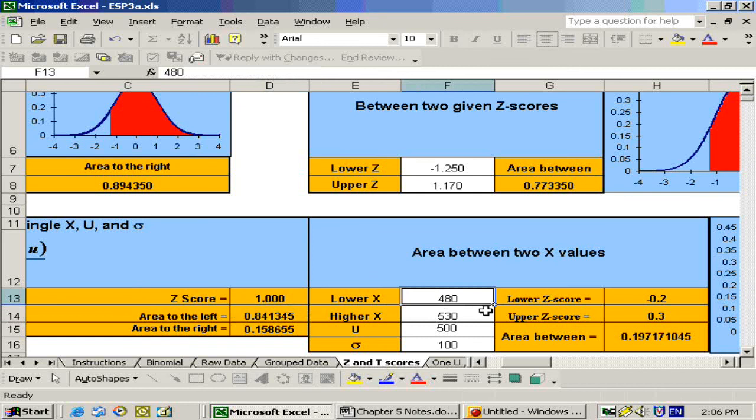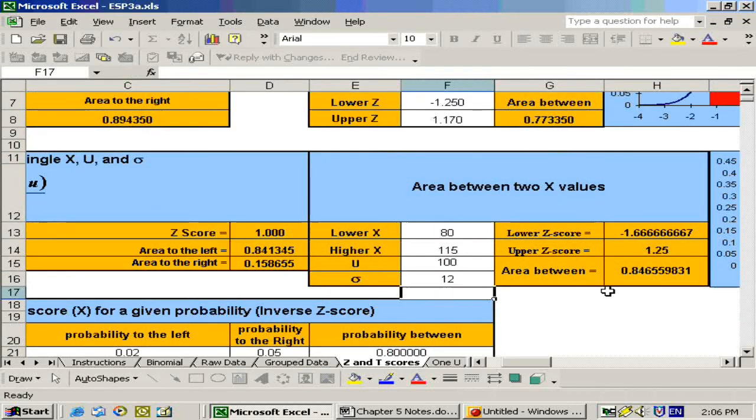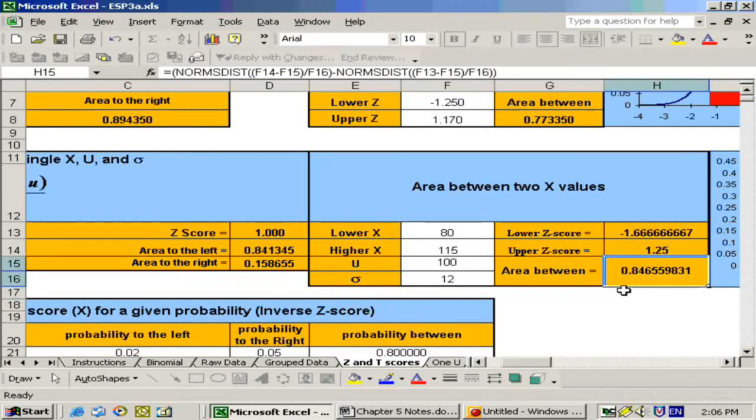So the lower X score is 80, the upper score is 115. The mean we were told is 100, and the standard deviation was 12. We put those in, and it tells us our two z-scores right here, and here's our probability, an 84.65 or 84.66% chance.